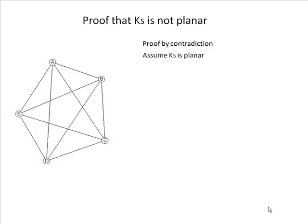Assume K5 is planar. Then it must obey Euler's relationship, which says R + N = A + 2. Now the number of nodes is 5, the number of arcs is 10. Quick calculation shows us that the number of regions is 7.